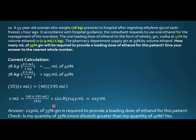So 223 mLs of 35% gin is required to provide a loading dose of ethanol for this patient. The check is, is my quantity of 35%, which is more diluted, greater than my quantity of 40%? Intuitively, it must be. If you have something more diluted, you're going to need more of it to get the exact same amount of the active ingredient.